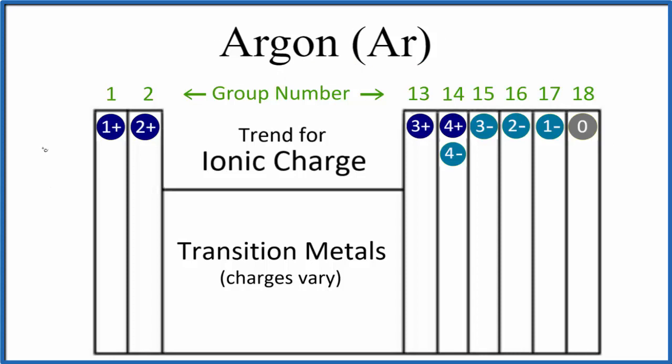When we look at the periodic table, we have this general trend here for ionic charge. Elements in group 1 form ions that are 1+, elements in group 2 are 2+. We skip the transition metals, their charges vary. Group 13 is 3+, and so on.